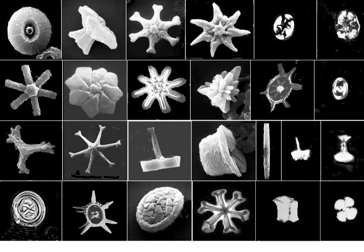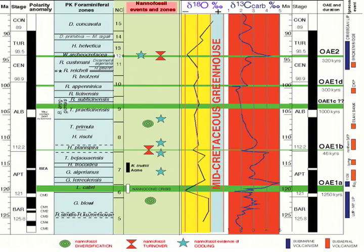Only foraminifera have been more thoroughly investigated and used more frequently for correlation and studies of climate. Calcareous nanofossils are found only in strata containing some calcium carbonate.